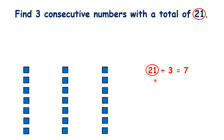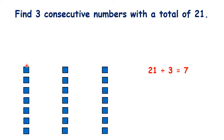Our dividend is the total, which for this question is 21. And our divisor is 3 because we want to find three numbers. But our numbers can't be 7, 7 and 7 because these aren't consecutive numbers. So what do we need to change here so that we have consecutive numbers?